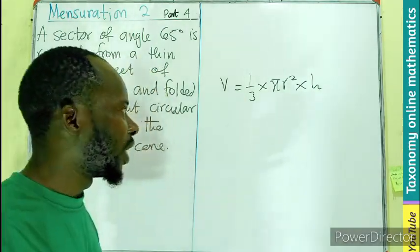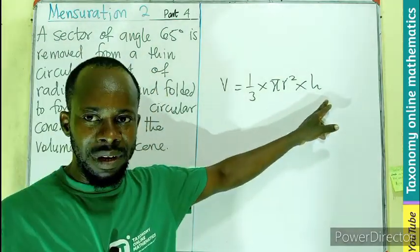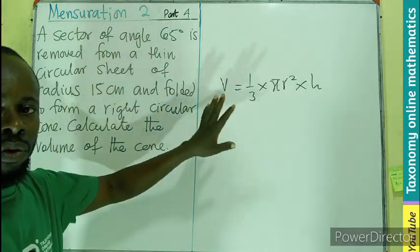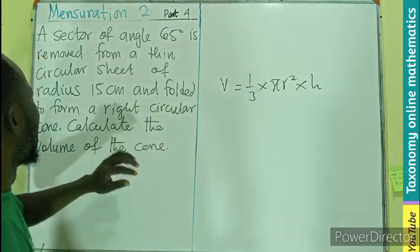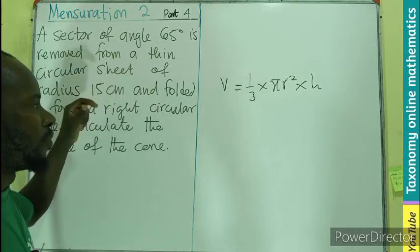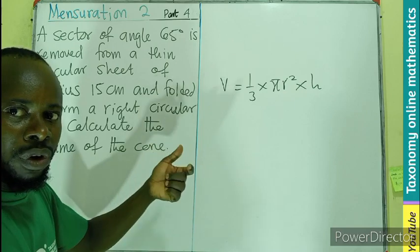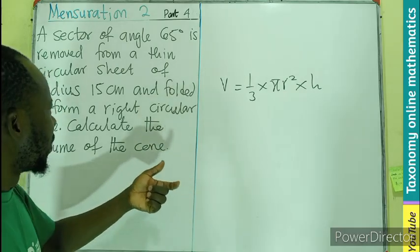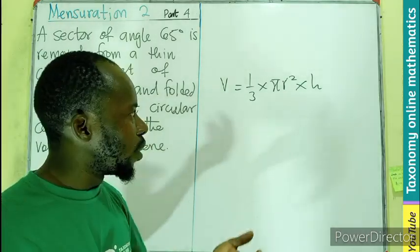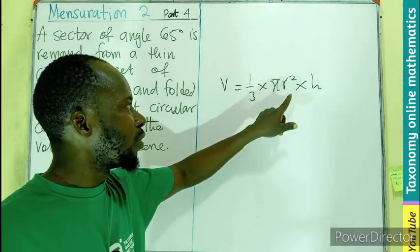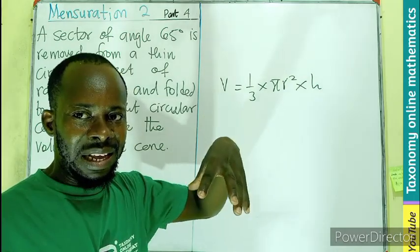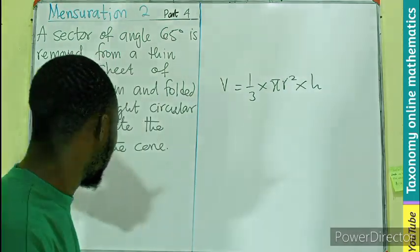Let's go into the question and see if we can identify any of this. We know the angle of the sector, which is not the angle of the cone, is given. We also have the radius of that sector given. Those are the only two dimensions that have been given, so it will be difficult to find the volume without knowing the radius of the base.